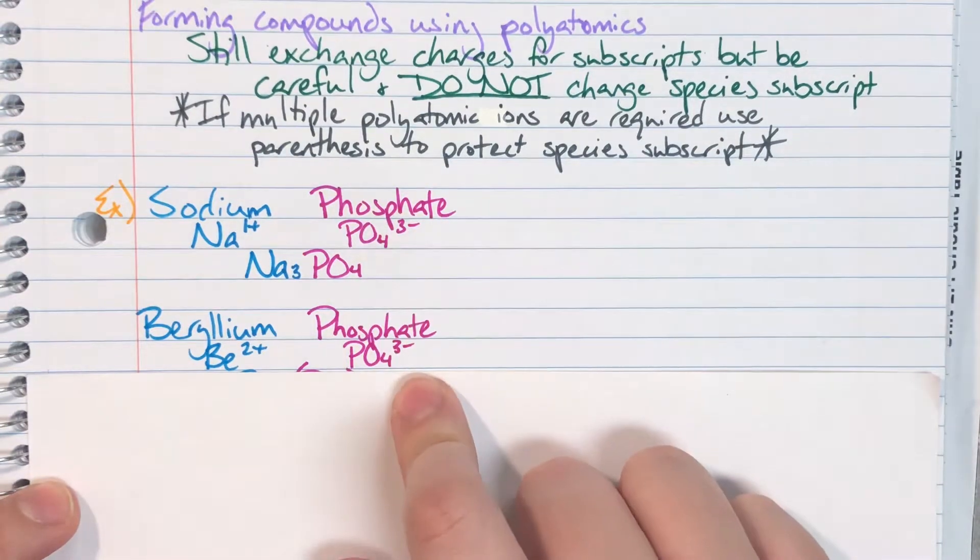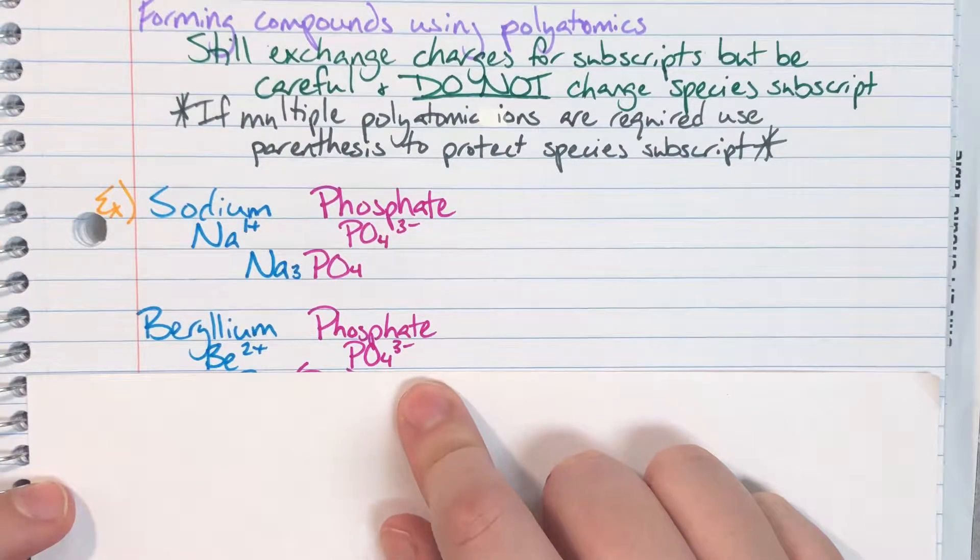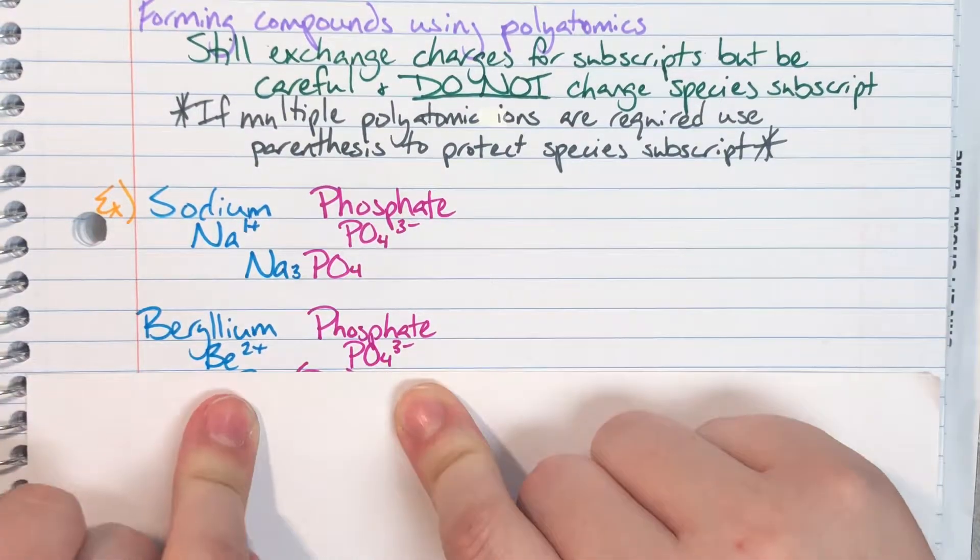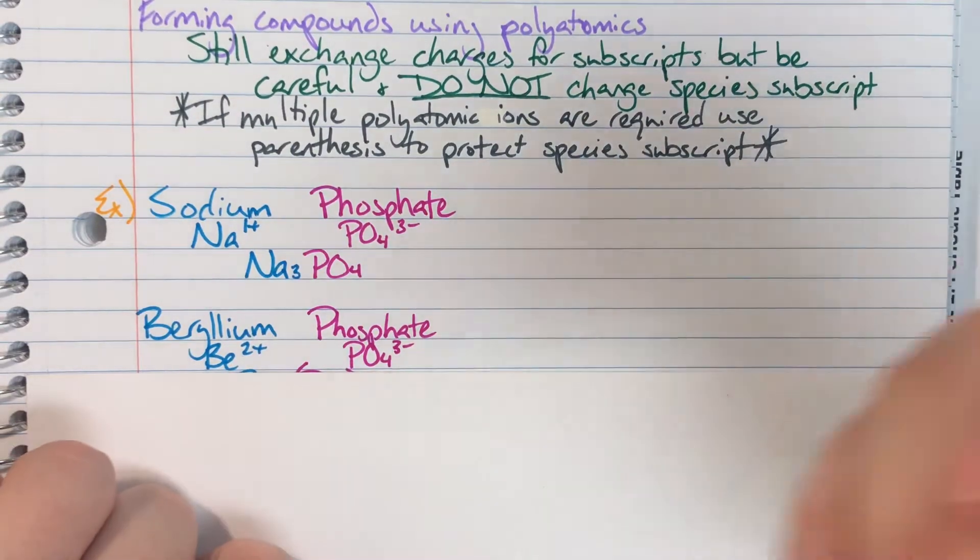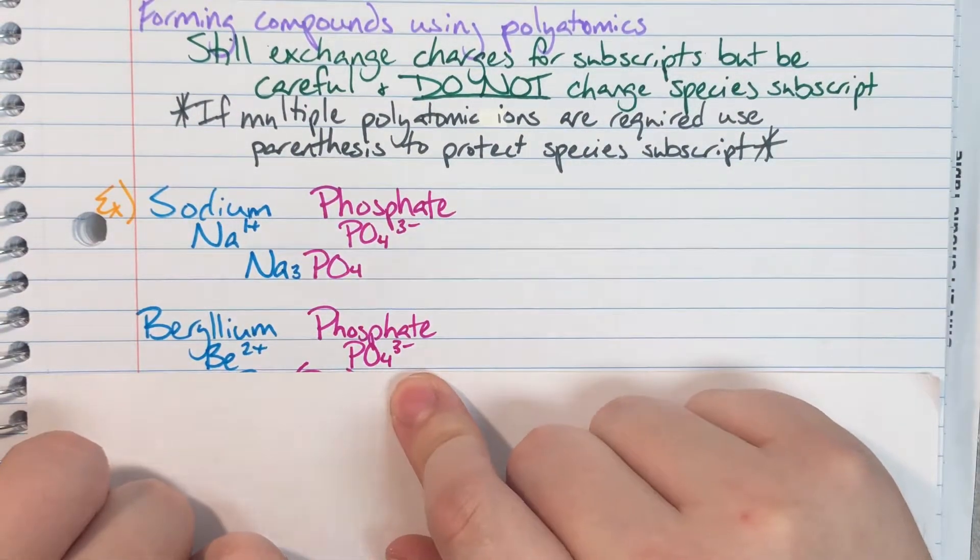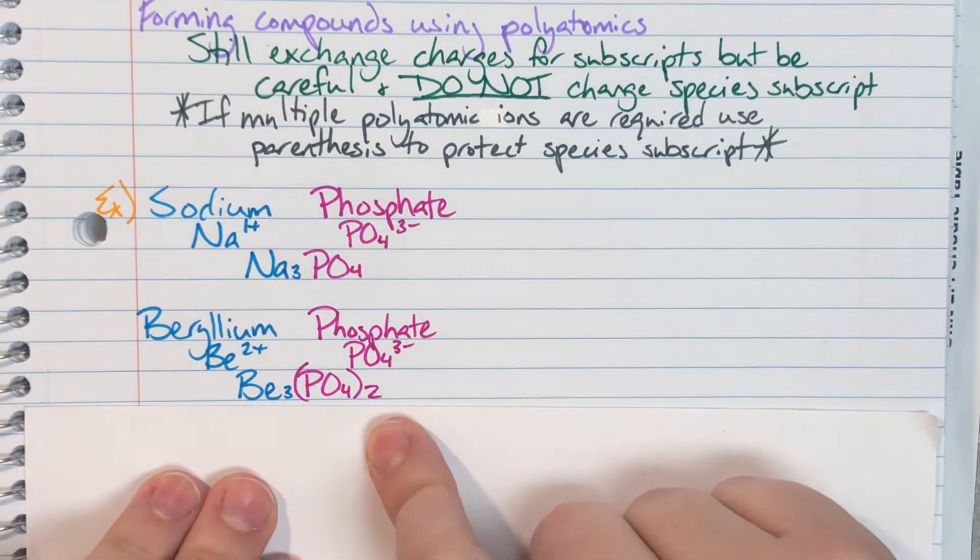Now phosphate again is going to stay the same. I don't have to think about it. I know who phosphate is. I just have to write phosphate down. Now this time my charge from beryllium is more than one, which means I have to have more than one phosphate. So when I do that, I will write it in parentheses like this.